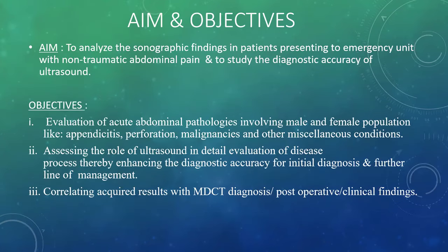Aim and objectives: to analyze the sonographic findings in patients presenting to emergency unit with non-traumatic abdominal pain and to study the diagnostic accuracy of ultrasound. Objectives include evaluation of acute abdominal pathologies involving male and female population like appendicitis, perforation, malignancies and other miscellaneous conditions. Assessing the role of ultrasound in detailed evaluation of disease process thereby enhancing the diagnostic accuracy for initial diagnosis and further line of management. Correlating acquired results with multi-detector CT diagnosis or post-operative or clinical findings.